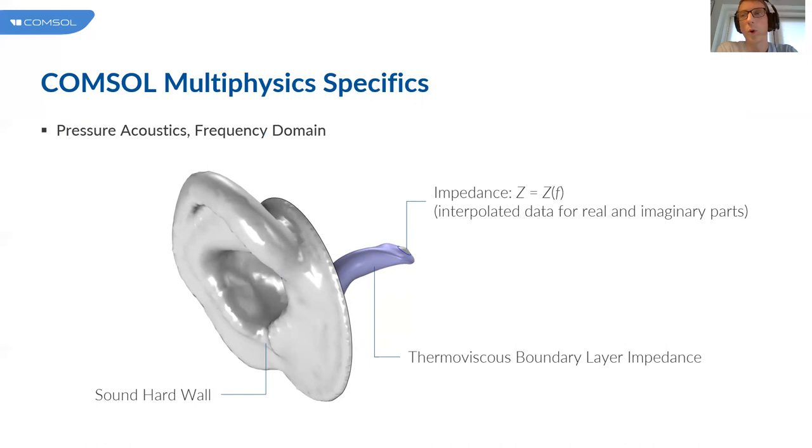On the walls of the ear canal we are applying the thermoviscous boundary layer impedance. It's a boundary condition that gives you the thermoviscous boundary layer losses that have become important in smaller geometries. In this geometry you only actually get a bit of additional damping at the very low frequencies, but it's minimal. But we wanted to include it in the model since it's quite easy to include using this boundary condition. In this particular case the boundary condition is fully valid since we are not in really microacoustic applications yet.